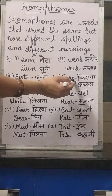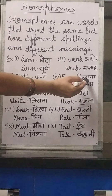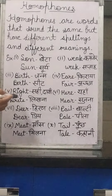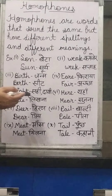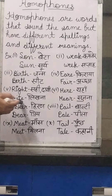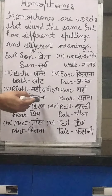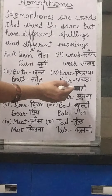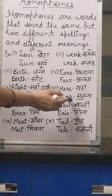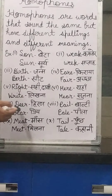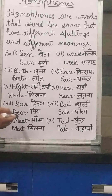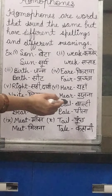Next: F-A-R-E means 'fare' (kiraya), and F-A-I-R means 'fair' (accha). Then: R-I-G-H-T means 'right' (sahih), and W-R-I-T-E means 'write' (likhna). Also: H-E-R-E means 'here' (yahan), H-E-A-R means 'hear' (suna), D-E-E-R means 'deer' (hiran), and D-E-A-R means 'dear' (pyara).